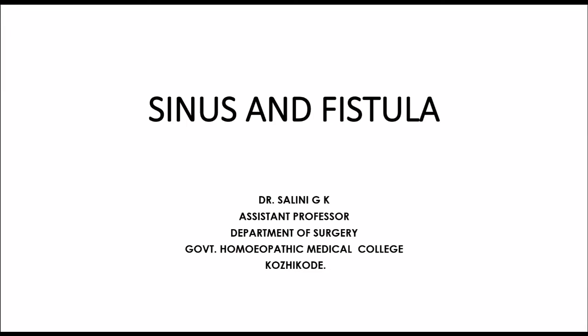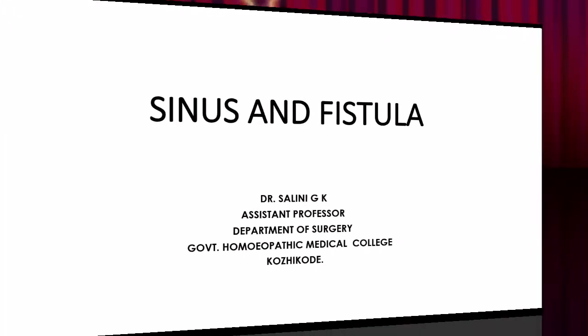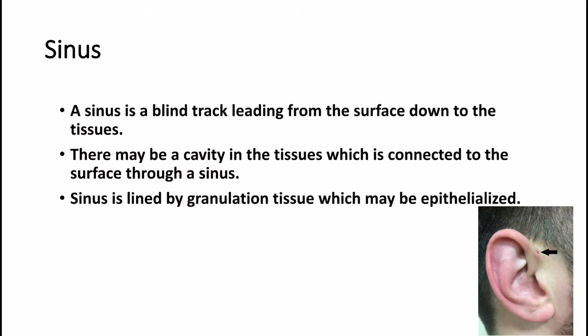Today's class is on Sinus and Fistula. A sinus is a blind track leading from the surface down to the tissues. There may be a cavity in the tissues which is connected to the surface through a sinus. A sinus is lined by granulation tissue which may be epithelialized.